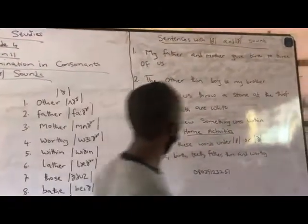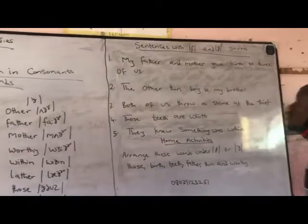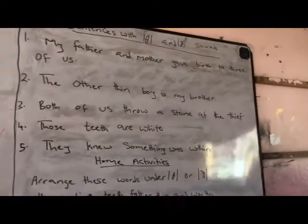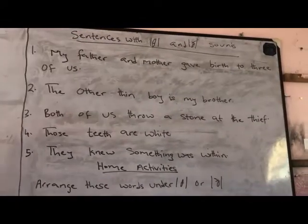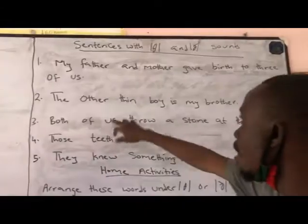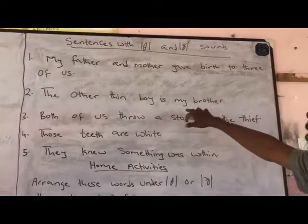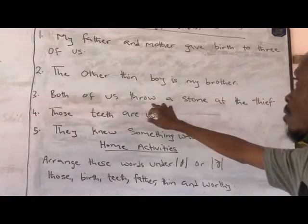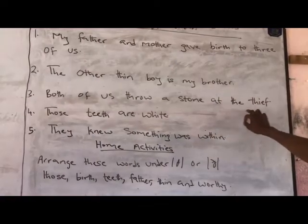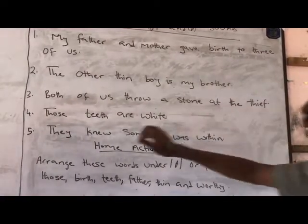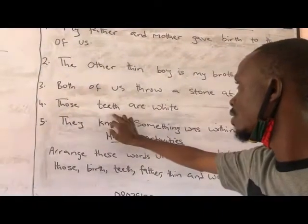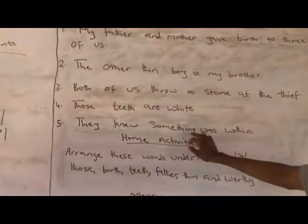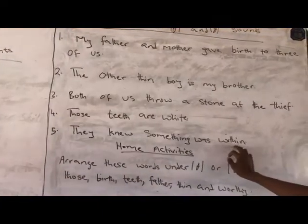Now let's look at sentences with the two sounds. My father and mother gave birth to three of us. The other thin boy is my brother. Both of us threw a stone at the thief. Those teeth are white. They knew something was within.